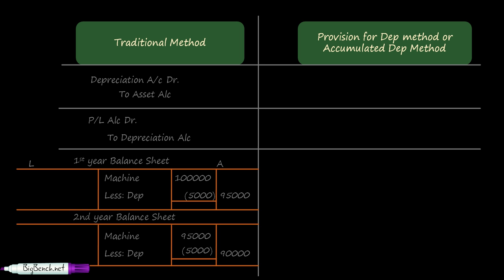Now let us look at the provision for depreciation method. The first entry is: depreciation account debit, to provision for depreciation account. This makes the method different — we are not crediting the asset account. The asset account is not touched over the period of its life. A separate account called provision for depreciation account is credited, and depreciation accumulates in that account year after year — hence it is also called the accumulated depreciation method. As usual, depreciation is transferred to the profit and loss account.